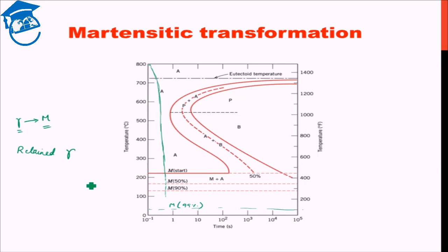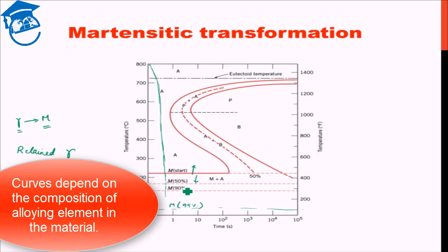Similar to the idea which I discussed previously about the shifting of the pearlite start, pearlite finish curves on alloying. Similarly, the martensite start and different martensite percentage lines also shift either upwards or downward depending on what alloying element is present and in what percentage that alloying element is present. So there will be different curves for martensite start and martensite 90 percent depending on what is the composition of the material involved.